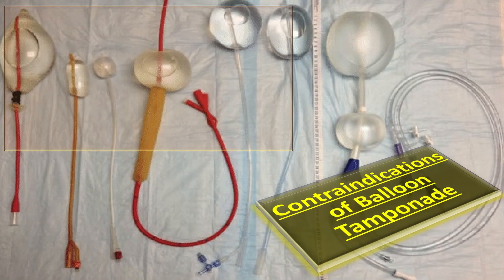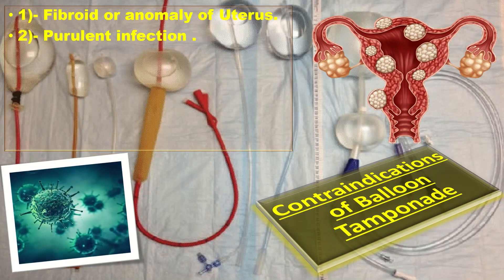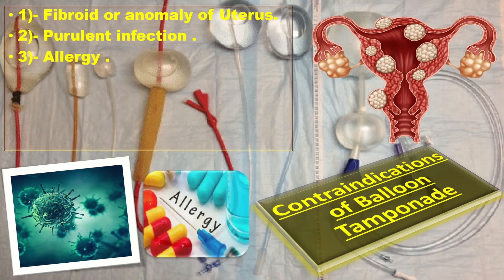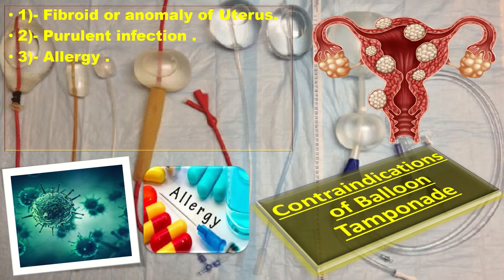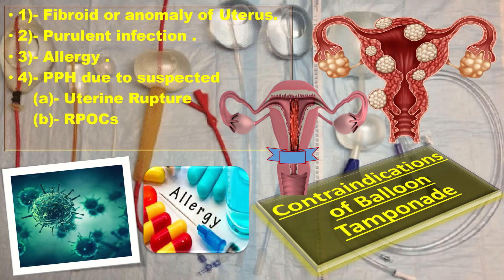The contraindications of balloon tamponade include: first, fibroids or any anomaly of the uterus causing distortion of the uterine cavity; second, purulent infection of the vagina and cervix; third, allergy to balloon materials such as silicone and rubber; and PPH due to suspected uterine rupture, retained products of conception, or vaginal and cervical trauma.